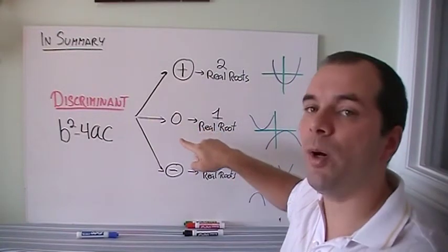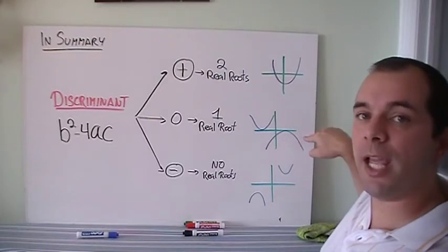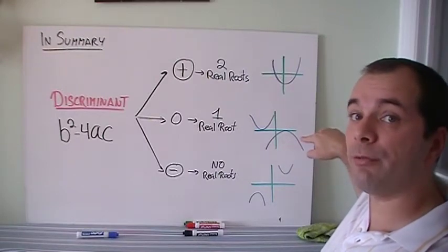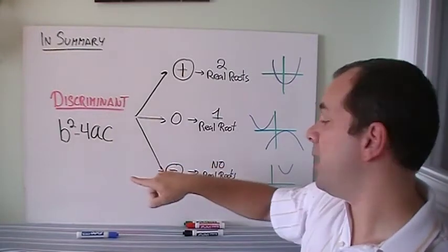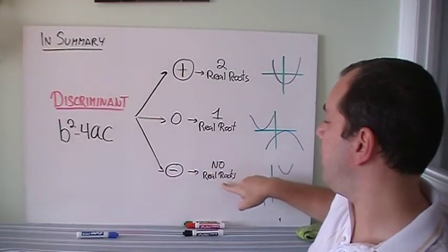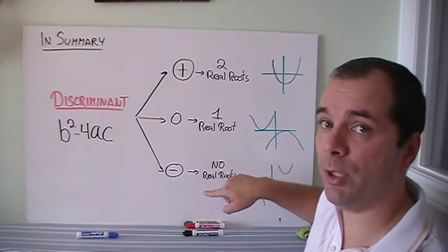If that number, the discriminant b squared minus 4ac, gives you zero, then you know that it's just gonna be touching only once. So it's gonna be one of these cases that it opens up or opens down, and you get one real root. And if the discriminant ends up being a negative number, that tells you that there are no real roots, that the parabola will not cross the x-axis.